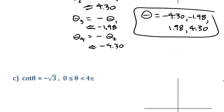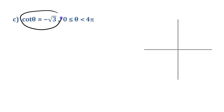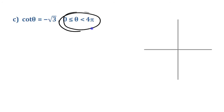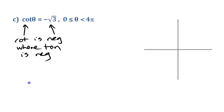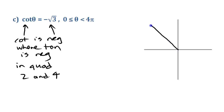Let's look at one last example. We're looking for where cotangent equals negative root 3, with a domain of 0 to 4π — two full counterclockwise turns. Cotangent is negative in the same quadrants as tangent, which is quadrants two and four.